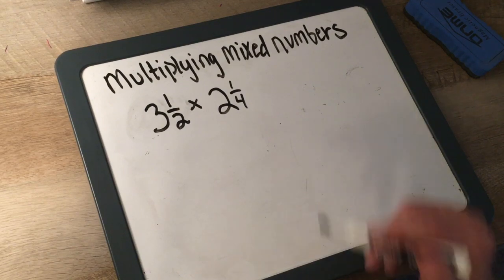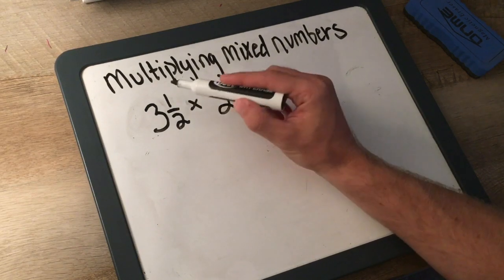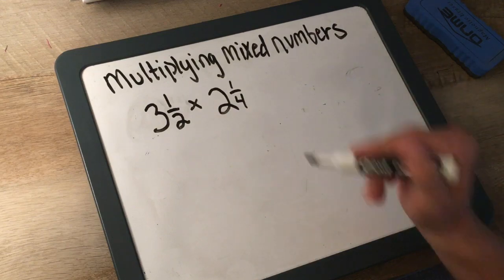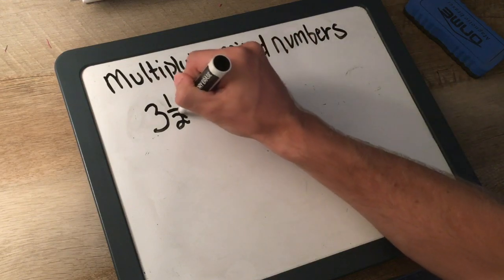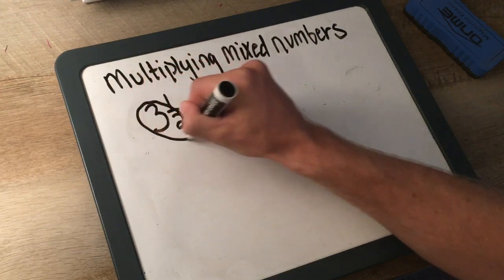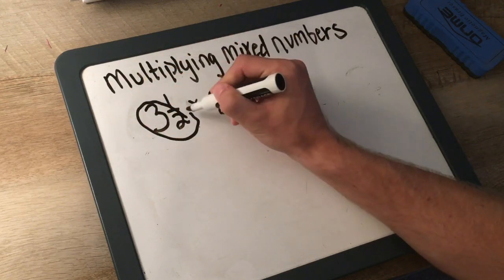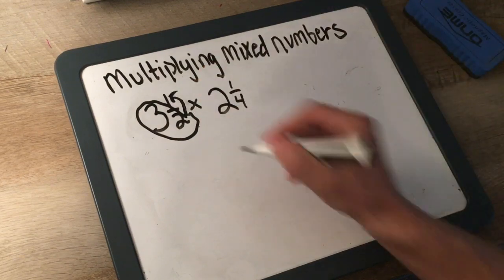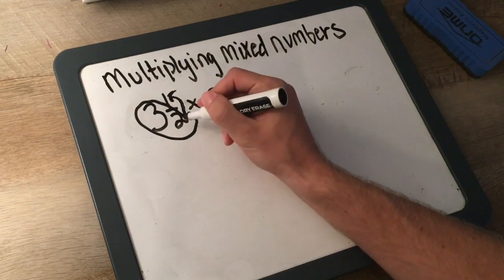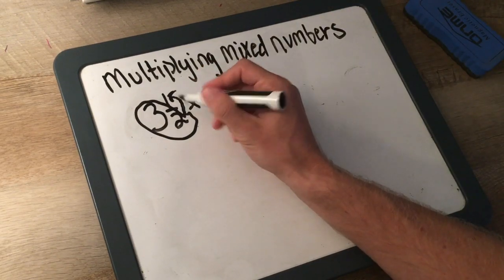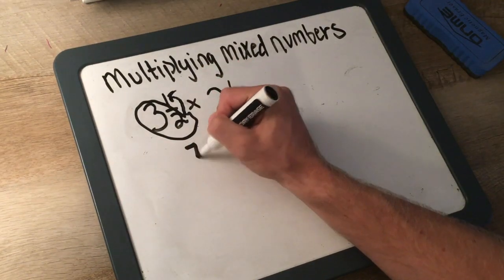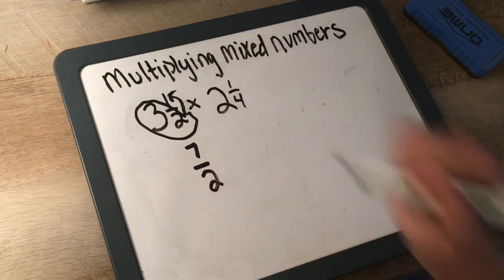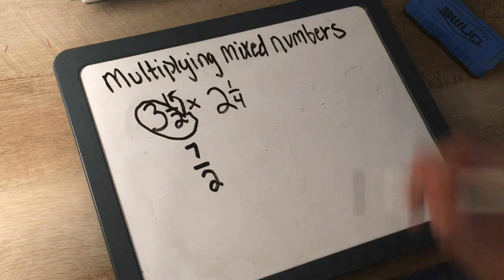Alright, the first thing we've got to do is multiply the whole number by the denominator. We get 6, and we add it to the numerator. So we get 6 plus 1 is 7 over 2. We keep the same denominator.